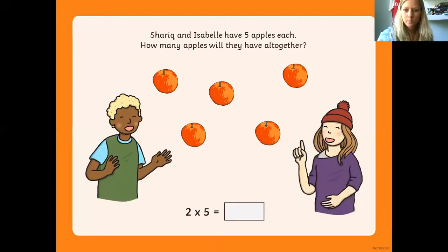So I'm gonna start with the first question. It says, Shariq and Isabel have five apples each. How many apples will they have altogether? I'm gonna use my pens. So I've got five pens here and five pens here. So you can either count them all together.